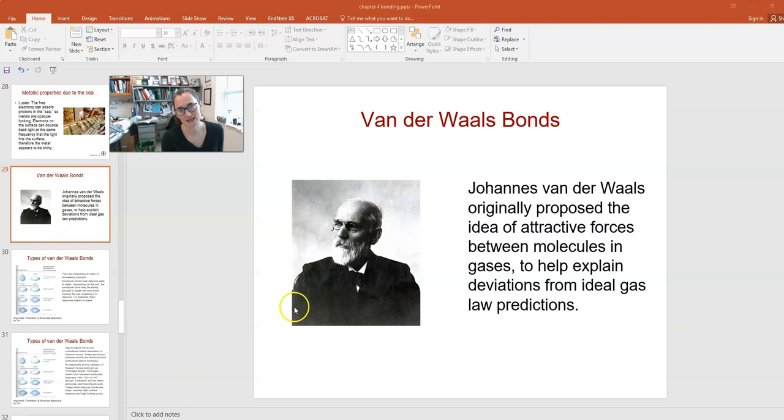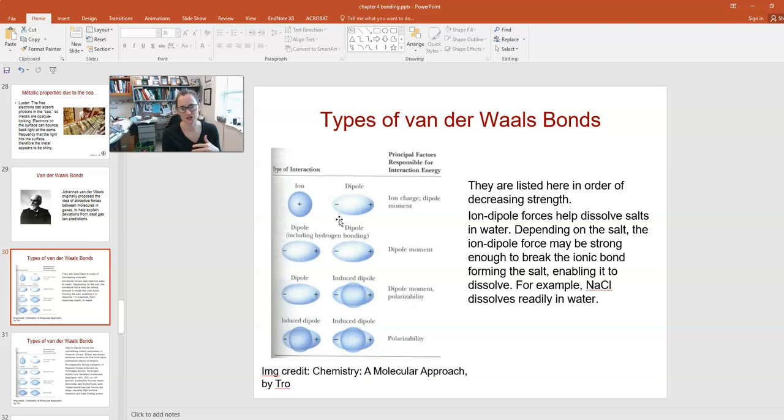Let's talk about the different types of van der Waals bonds. They're listed here in order of increasing strength, strongest at the top, weakest at the bottom. We're going to go through these one by one and discuss them.